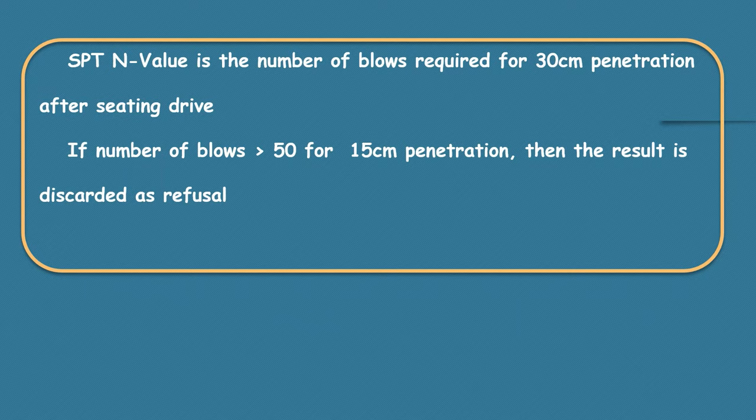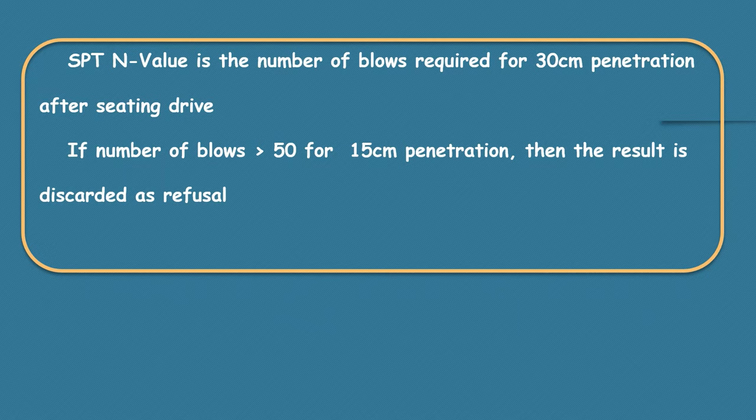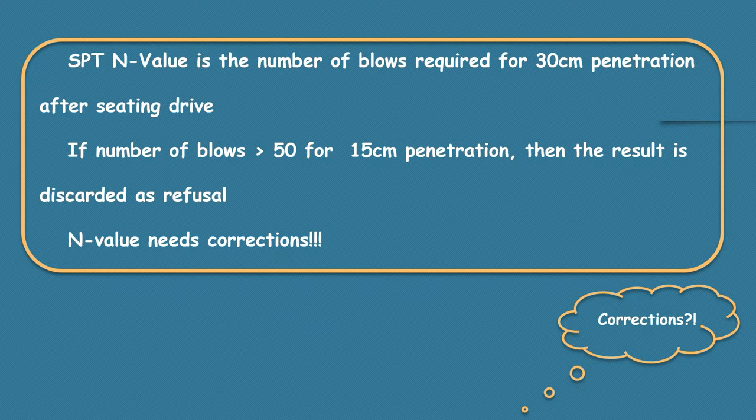Your recorded n value has number of errors and hence it needs number of corrections too. But IS code recommends 2 corrections in particular, of which first one is overburden correction.